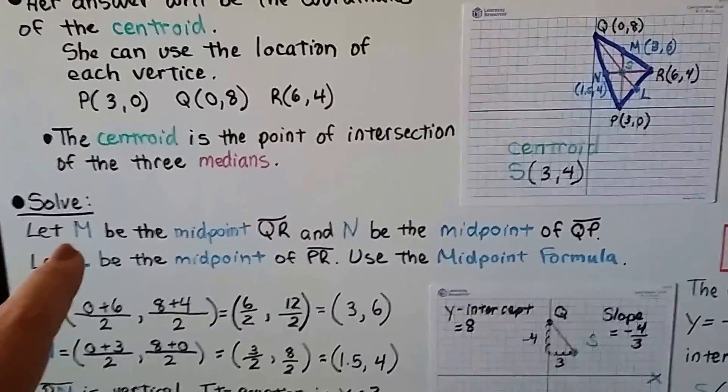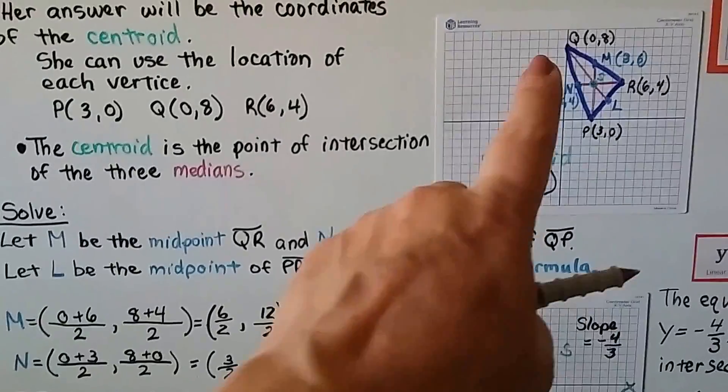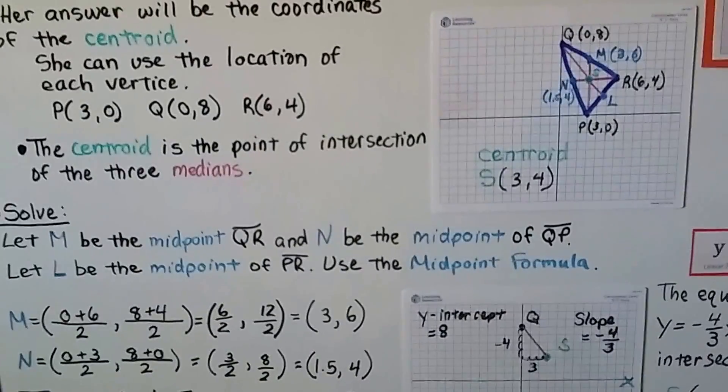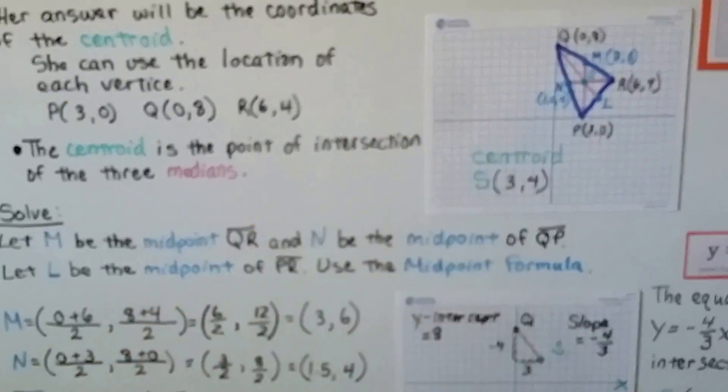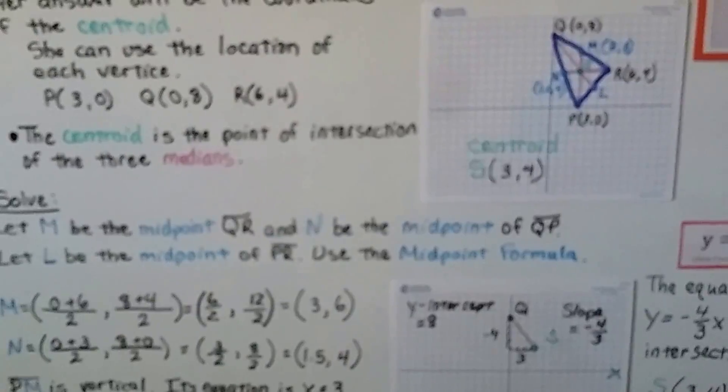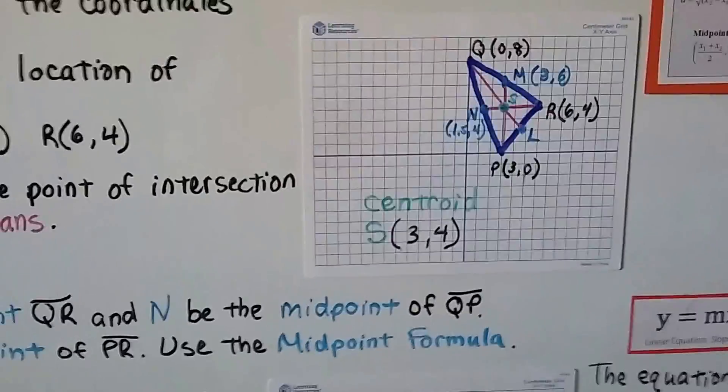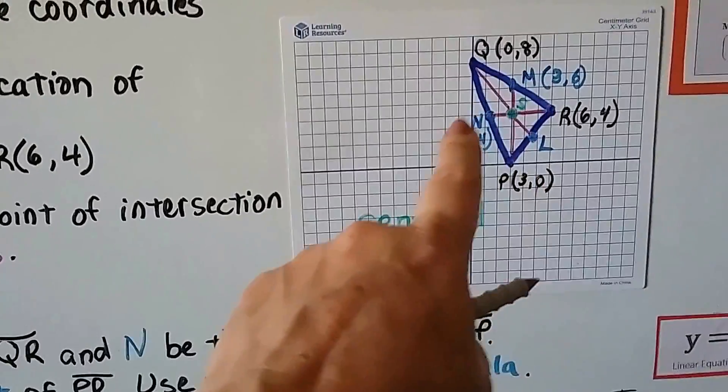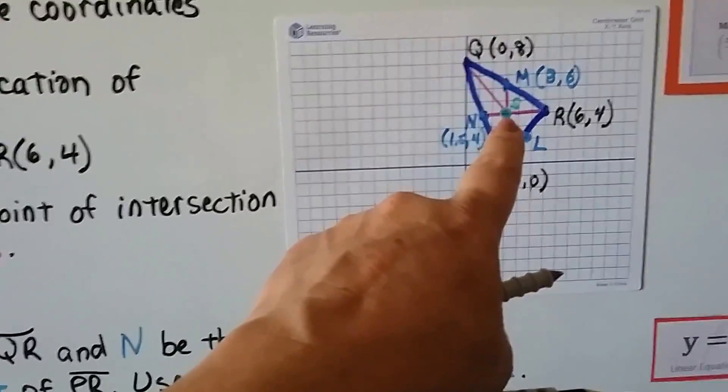So to solve this, we're going to let M right here be the midpoint of QR, and we're going to let N be the midpoint of QP. So there's N. And L can be the midpoint of PR right here. So we find our midpoints. And we can see where they meet. They meet at S, don't they?